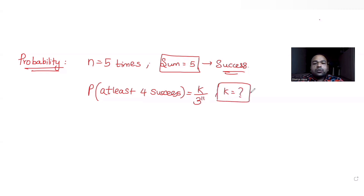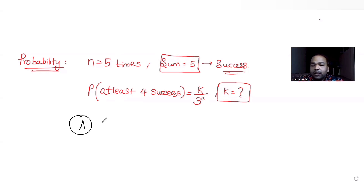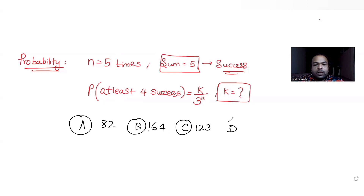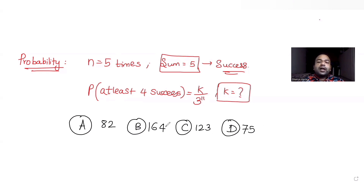Let's do this question. A pair of dice is thrown, and the options given to us for the value of K are: 82, 164, 123, and 75. We need to figure out which one is the correct answer.